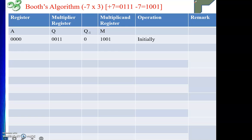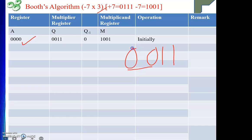Now we do the initialization. Register A holds four zeros. Q holds the multiplier, which is 3. Since 3 is 0 1 1 in binary, we extend it to 4 bits by copying the sign bit: 0 0 1 1. Q minus one is initially 0. M holds the multiplicand, which is minus 7, represented as 1 0 0 1. This is the initial configuration.